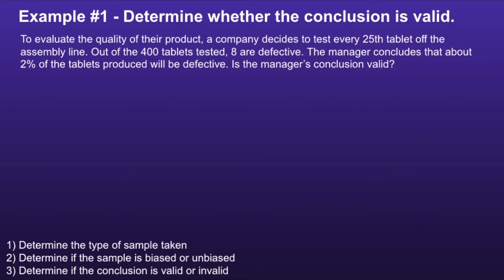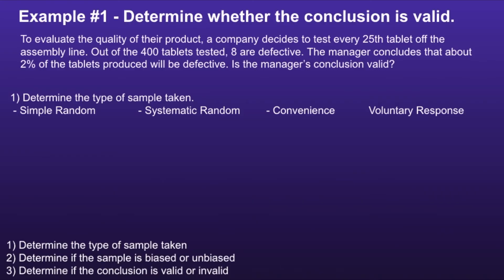Example 1: Determine whether the conclusion is valid. To evaluate the quality of their product, a company decides to test every twenty-fifth tablet off of the assembly line. Out of four hundred tablets tested, eight are defective. The manager concludes that about two percent of the tablets produced will be defective. Step one: determine the type of sample taken. Since every twenty-fifth tablet is taken off the assembly line, this would be a systematic random sample.